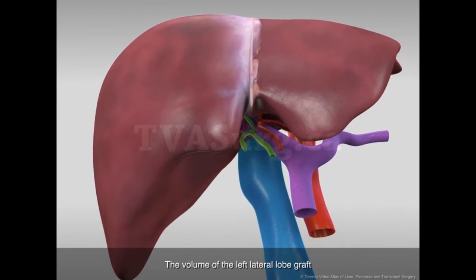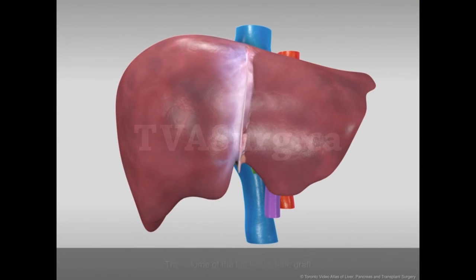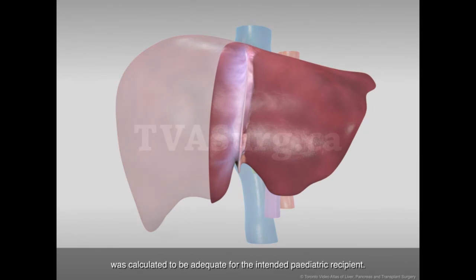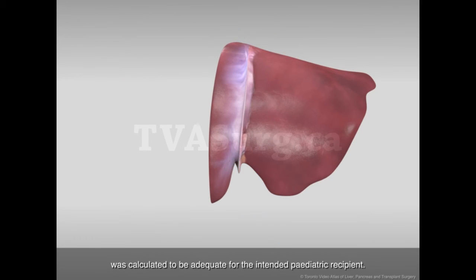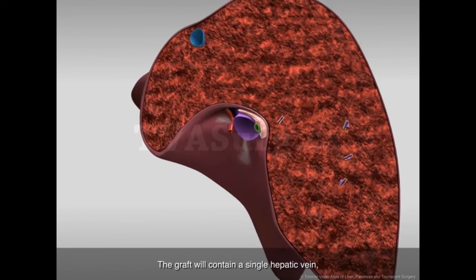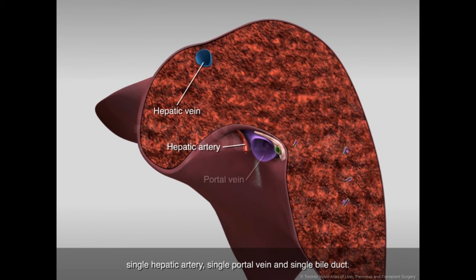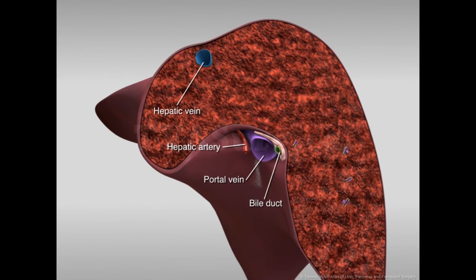The volume of the left lateral lobe graft was calculated to be adequate for the intended pediatric recipient. The graft will contain a single hepatic vein, single hepatic artery, single portal vein, and single bile duct.